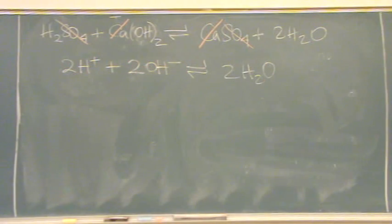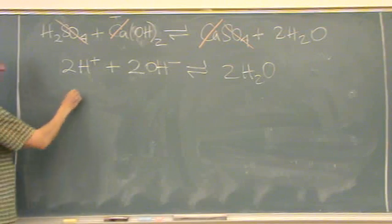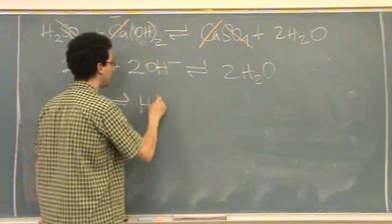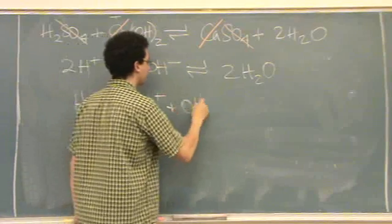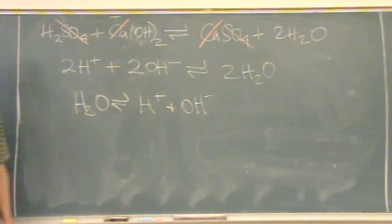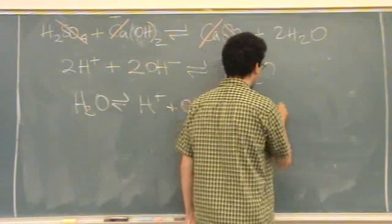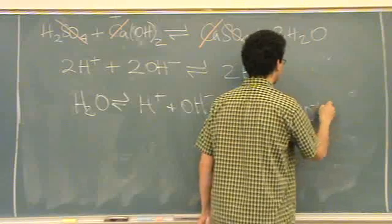This reaction should look very familiar to you. Does anybody recognize it? It's the reverse of the ion product of water. And it has a special K. Which K is that? KW. KW. Which is equal to—get it on the back of the test—1.0 times 10 to the minus 14.